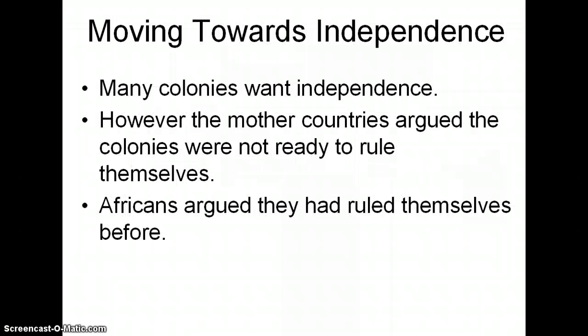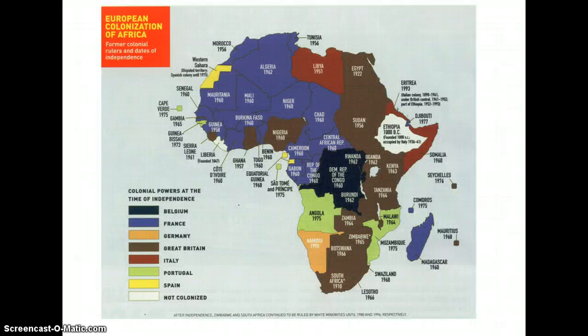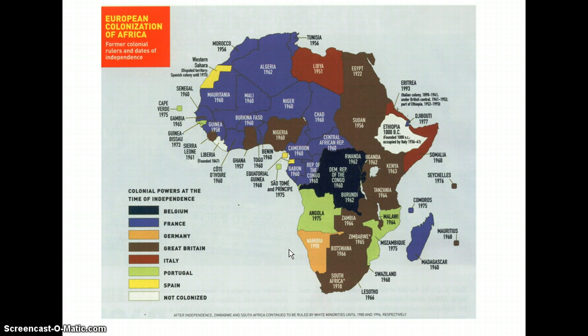In terms of moving towards independence, many colonies wanted independence. However, the mother countries argued that colonies were not ready to rule themselves. Africans argued that they had ruled themselves for a long time before Europeans came along. This map shows where France was in charge — the blue areas — and where Great Britain was in charge — the brownish areas. You can get an idea of when countries became independent based on the dates, and if you look at Ghana, 1957 was fairly early on.